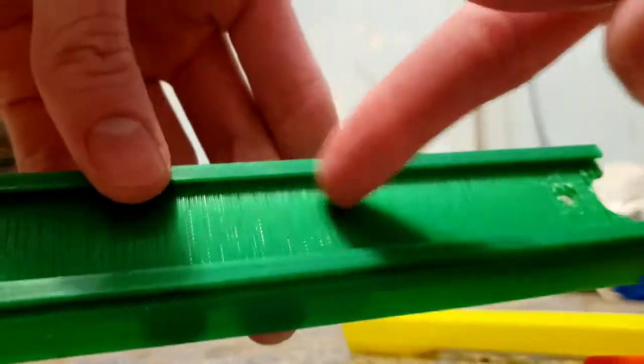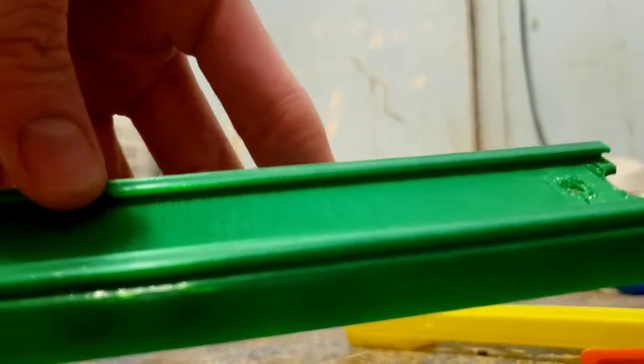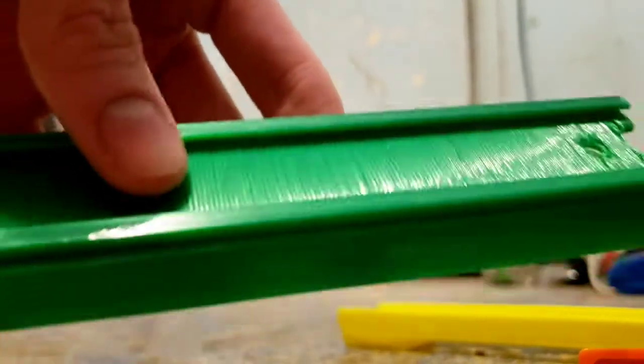There's all bridging. I did not need to support all this middle section. It just supported the ends for some reason. This was using Prusa Slicer.